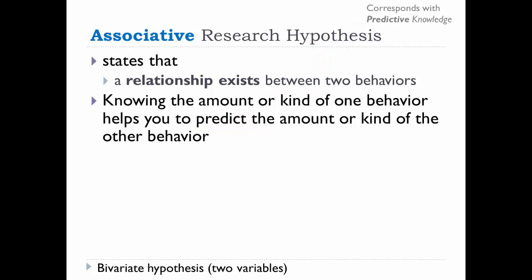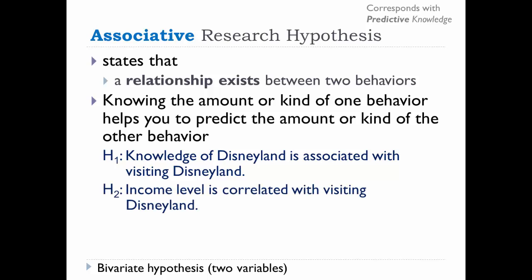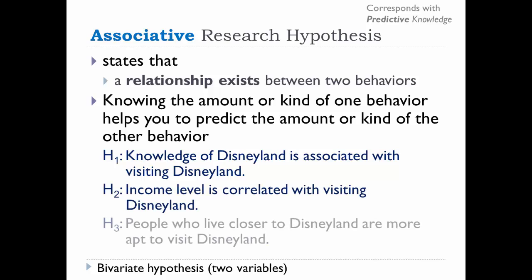For example, we can hypothesize that knowledge of Disneyland is associated with visiting Disneyland, or that income level is correlated with visiting Disneyland, or that people who live closer to Disneyland are more apt to visit. The assumption is that if I can find the patterns of relationship, I can predict, estimate, or anticipate. If I know you are aware of Disneyland, or have a certain income level, or live in Orange County, then I can predict that you have visited Disneyland at least once in your life.